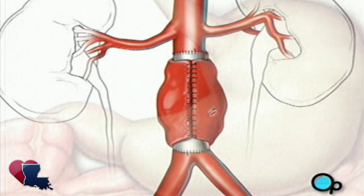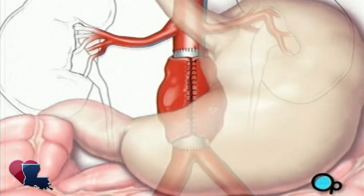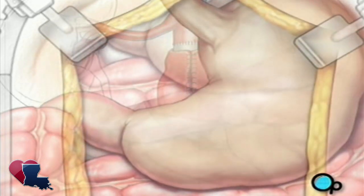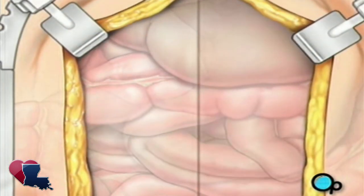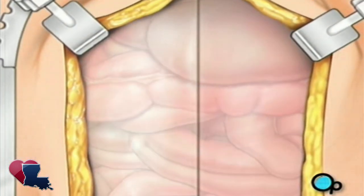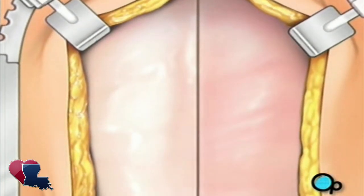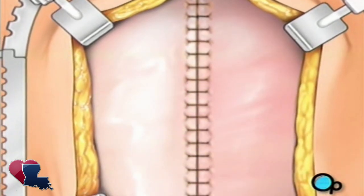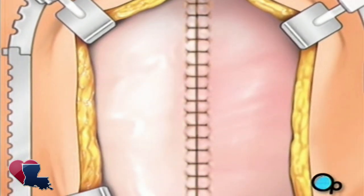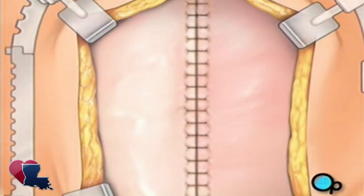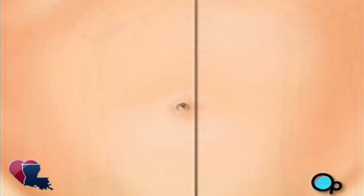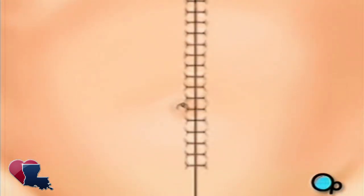Your doctor will restore all internal organs to their proper positions. The muscles and other tissue can then be closed with sutures. Finally, the skin is closed with staples and a sterile dressing is applied.